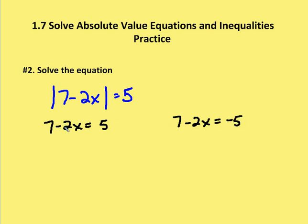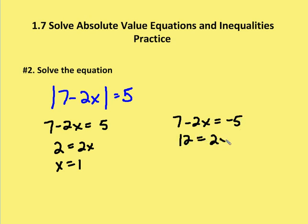Now I'm going to solve. On the first equation, I'll add 2x to both sides and subtract 5 from both sides. So I have 2 is equal to 2x, and then x is equal to 1, dividing both sides by 2. For the second equation, I'm going to add 2x to both sides and add 5 to both sides, so I end up with 12 is equal to 2x, or x is equal to 6. So x is equal to 1, or x is equal to 6.